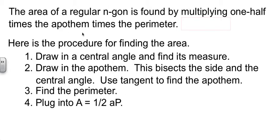Now, the way you find the area of a regular polygon, and they say n-gon here because we're using n for the number of sides, it's one-half times the apothem times the perimeter. So area, capital A, equals one-half times a, little a, the apothem, times p, the perimeter.